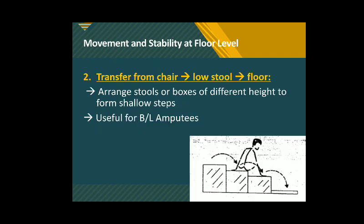The person can also transfer from a higher-level chair or stool to a lower-level chair or stool, or down to the floor. This is useful for patients who cannot stand but can sit on a higher surface. Stools or boxes of different heights are arranged to create shallow steps, as shown in the image. The person then hitches and hikes sideways from higher to lower surfaces, which is specifically useful for bilateral lower-limb amputees to lift the body through the upper limbs and shift downwards toward the floor.